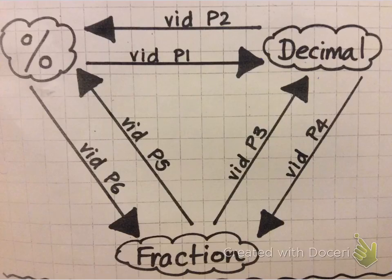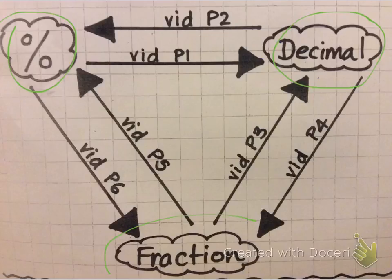And here they are on the FDP triangle. So we've got percentages here, we've got decimals here, we've got fractions here. Now this is stuck in your help book so if you're faced with any issues where you have to convert between them, you basically look at the two that you're converting between and you see which video you have to watch.